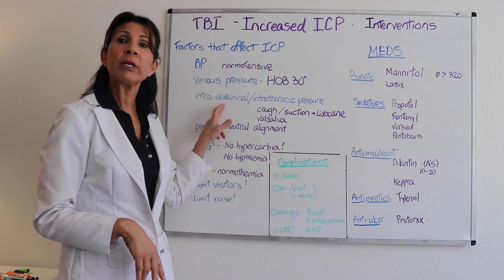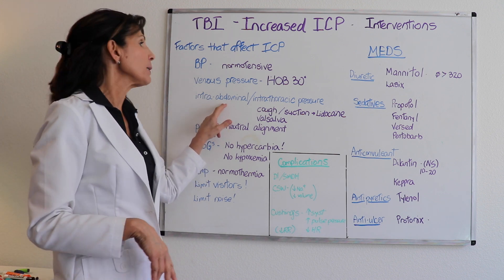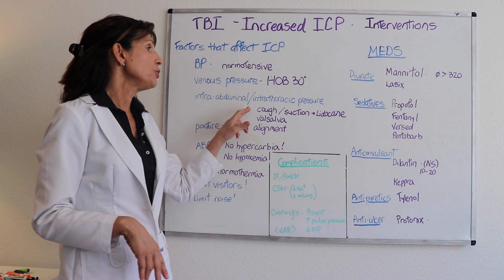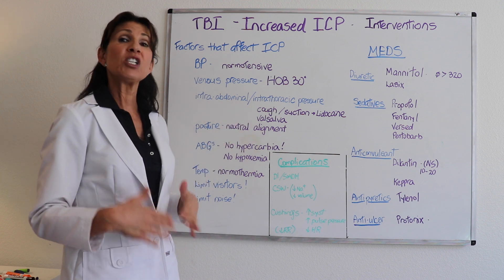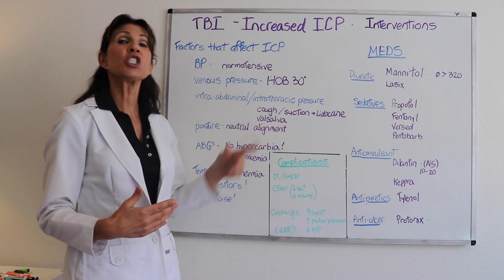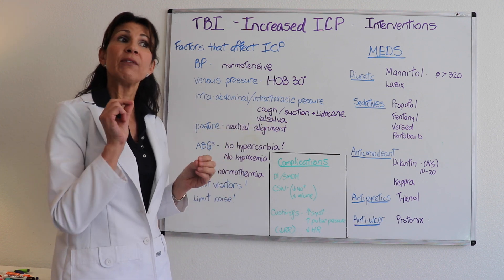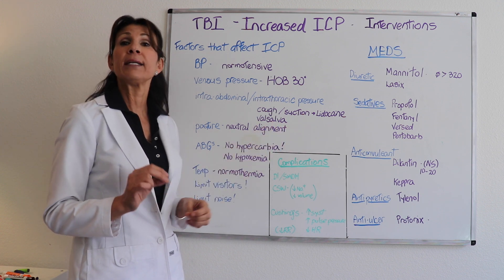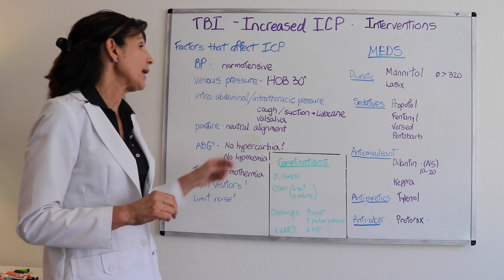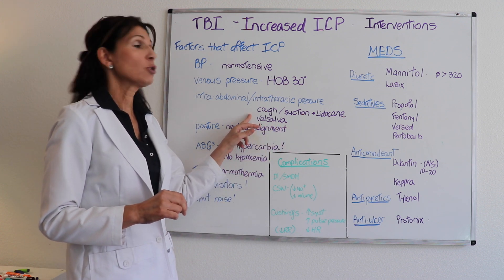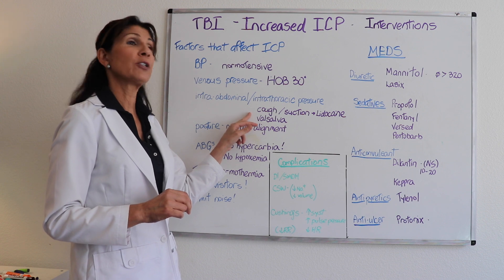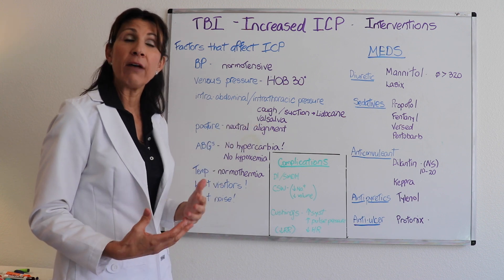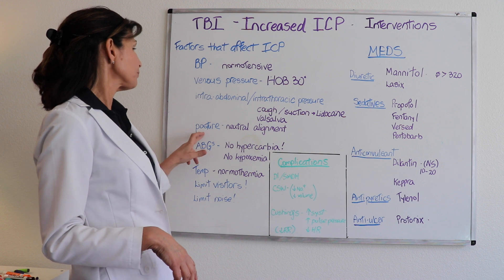An increase in intra-abdominal or intra-thoracic pressure — what does that mean for us? Try to not have the patient cough too much. When suctioning, make sure we blunt the gag reflex as indicated with lidocaine. Give colase, a stool softener, to cut down on the patient's use of the Valsalva maneuver when they bear down.